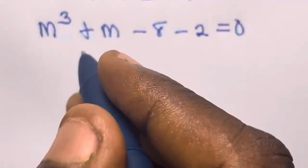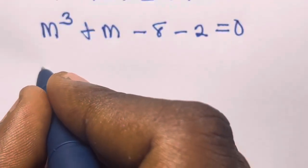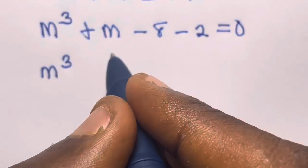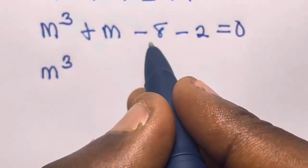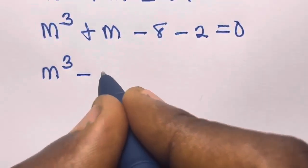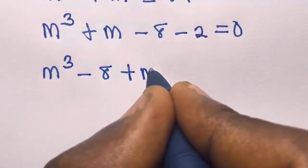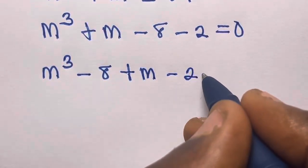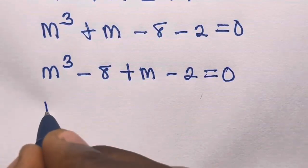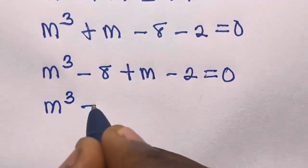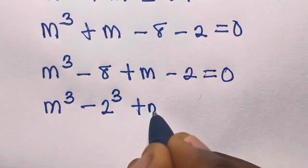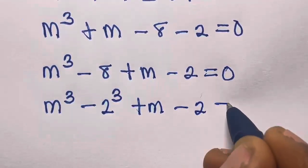We need to put this 8 here because 8 can be expressed as 2 raised to power 3. So we have M raised to power 3 minus 2 raised to power 3, plus M minus 2 equals 0.